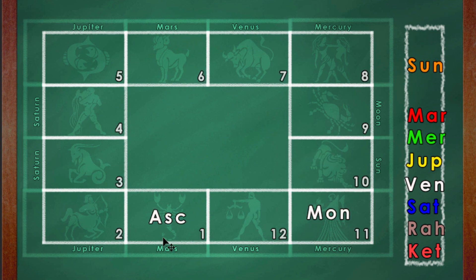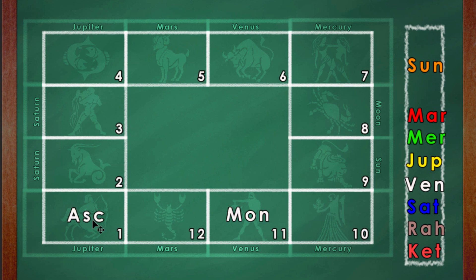Here the ascendant is on Scorpio (Vrishchika Lagna) and the moon is in the 11th in Kanya Rashi or Virgo sign. Here the moon is the 9th lord placed in the 11th Bhava. The 9th is the house of fortune and it is very good to have fortune tied up or linked with the 11th house of fulfillment of desires.